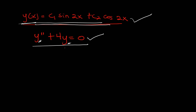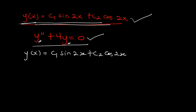So we have the function y of x which equals c1·sine(2x) plus c2·cos(2x). We want to find the second derivative, that's y'', but we first have to find y'. Let's take the first derivative. c1 is a constant; when we differentiate sine we get cosine, and we differentiate the angle and multiply by the derivative of that trig function.